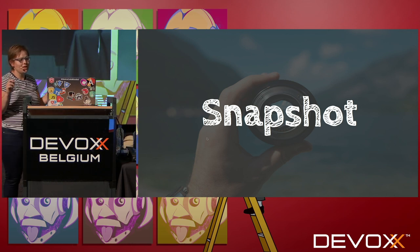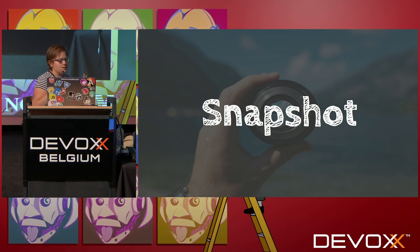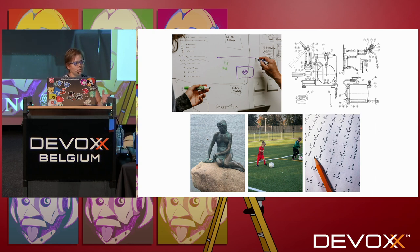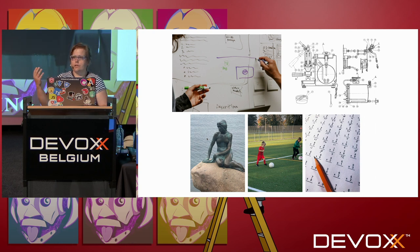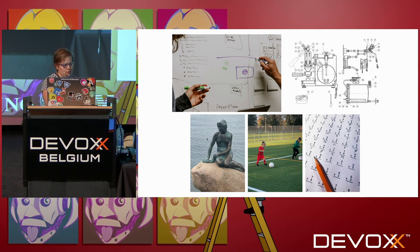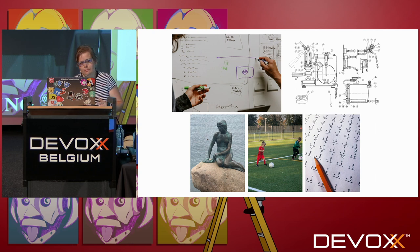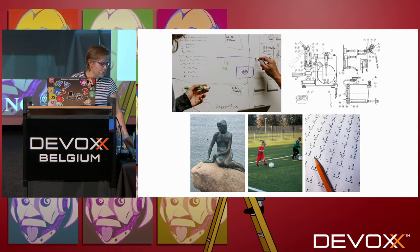What is a snapshot actually? Taking a day-to-day example: it can be the moment your son scores his first goal — a representation we capture. We have a test, and this test always has the same output. So if we reproduce our calculations, it's always the same output. That is a snapshot.